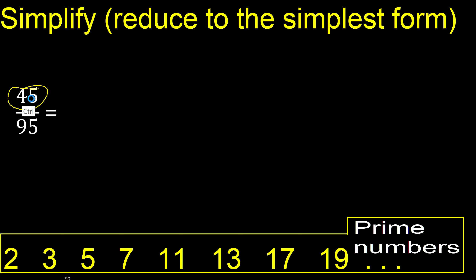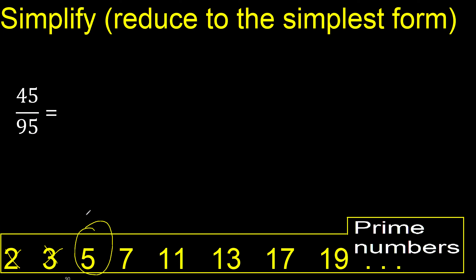Can 45 and 95 be divided by 2? No, because the last digit is not even. Cannot be divided by 3 because 95 cannot be divided by 3 — 9 plus 5 is 14, and 14 cannot be divided by 3. Can it be divided by 5?